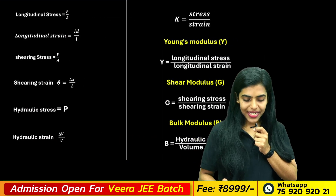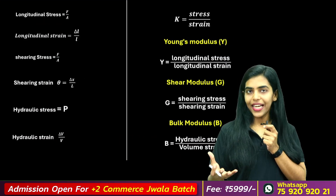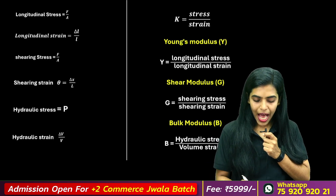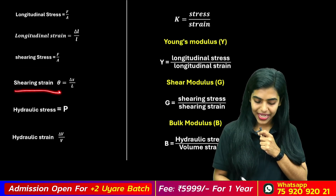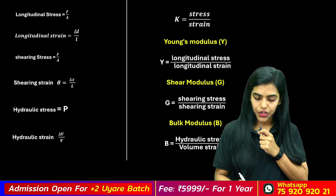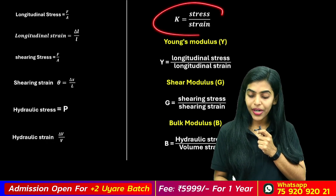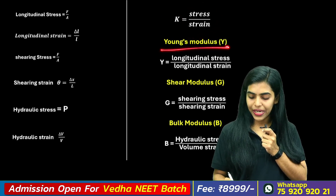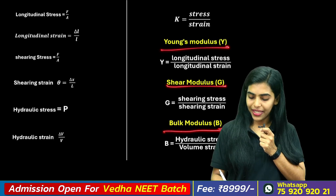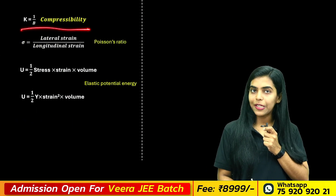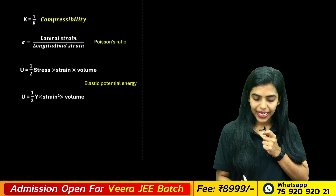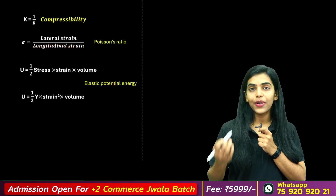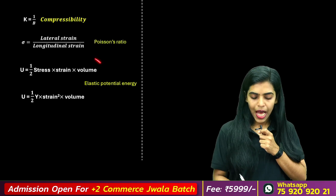In Mechanical Properties of Solids, longitudinal stress equals force by area, and strain equals change in dimension by original dimension. We learn Young's modulus, Shear modulus, and Bulk modulus — each is stress by strain. Compressibility is 1 by Bulk modulus. Poisson's ratio is lateral strain by longitudinal strain. Elastic potential energy stored in a stretched wire is also an important equation.